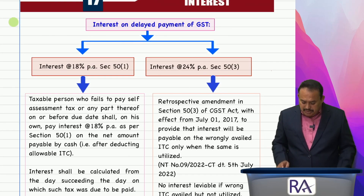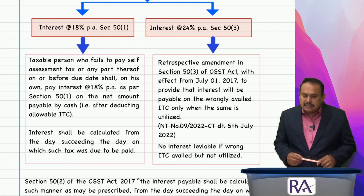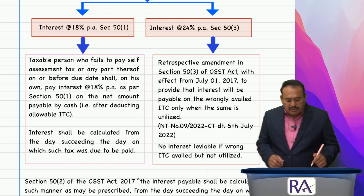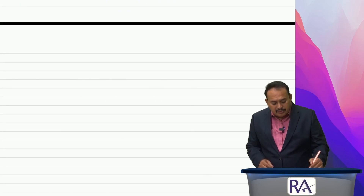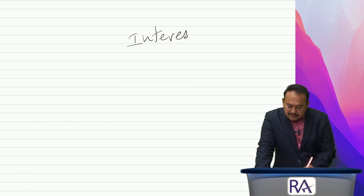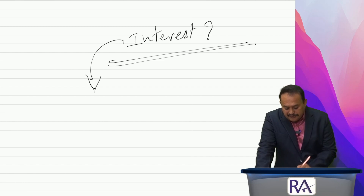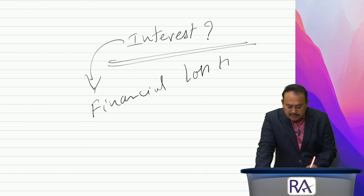This amended provision with retrospective effect is highly useful to the industry in a practical manner. Generally, when we refer to interest for delayed payment of GST — why does the department charge interest? Interest will be charged only when there is a financial loss to the department.